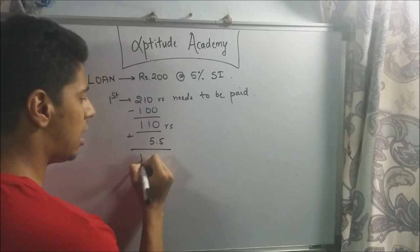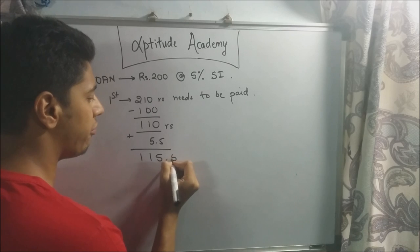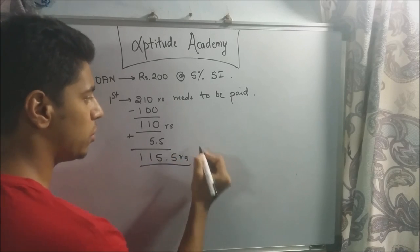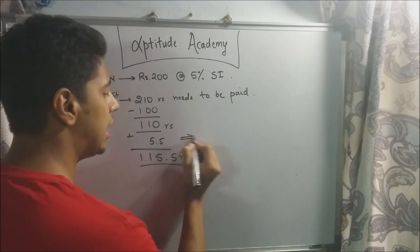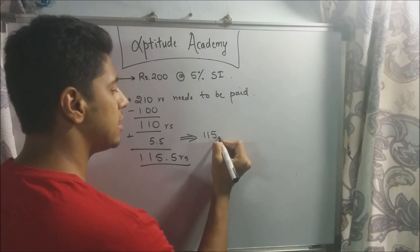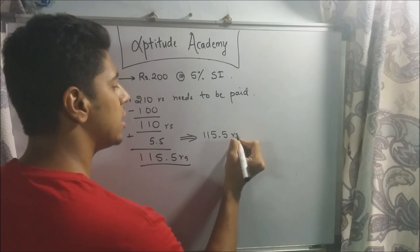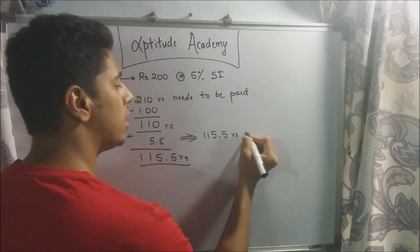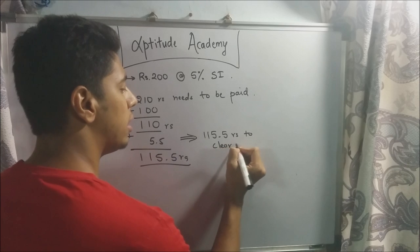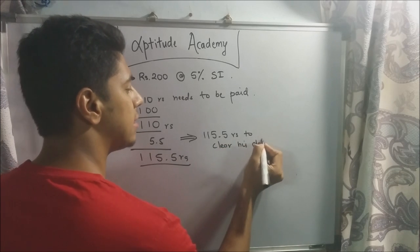So at the end of two years he needs to pay 110 plus 5.5, which equals 115.5 rupees — that is, 115 rupees and 50 paise — to clear his debts.